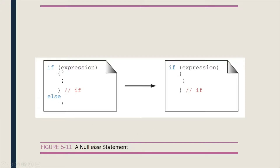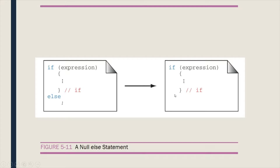This figure shows a null else statement. Given the expression, if the expression is true, the following statements are executed; if the expression is false, there are no statements under the else. This is equivalent to having an if statement without an else. It would be okay if the if statement is not paired with an else statement, but the else statement must always be paired with an if statement.